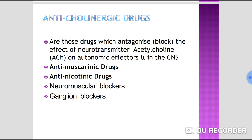Acetylcholine acts on muscarinic receptors and nicotinic receptors. Drugs that antagonize the muscarinic receptor-mediated action of acetylcholine are called anti-muscarinic drugs. Drugs that block the nicotinic receptor-mediated action are called anti-nicotinic drugs. Anti-nicotinic drugs are further classified into neuromuscular blockers and ganglion blockers.